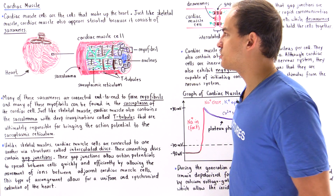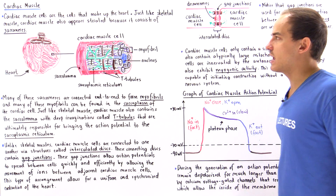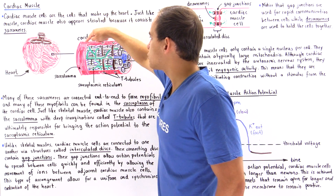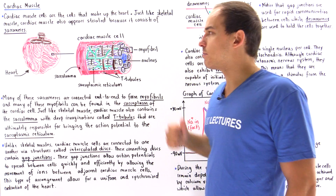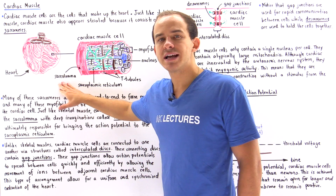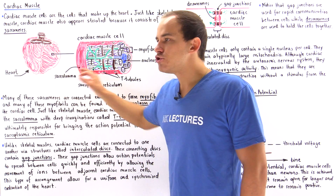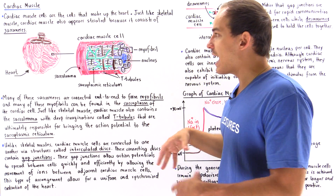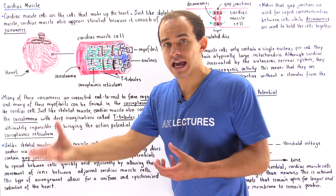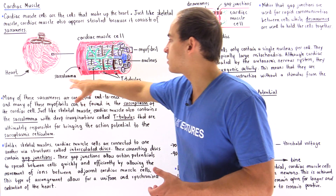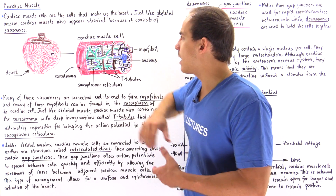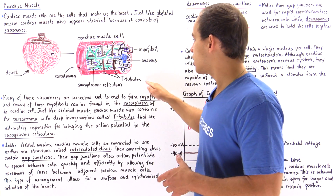In this particular cardiac muscle cell, we have seven myofibrils. The red portion of the cell is the plasma membrane, known as the sarcolemma. Just like we have a sarcolemma with T-tubules in skeletal muscle, we also have the sarcolemma with T-tubules inside our cardiac muscle cell.